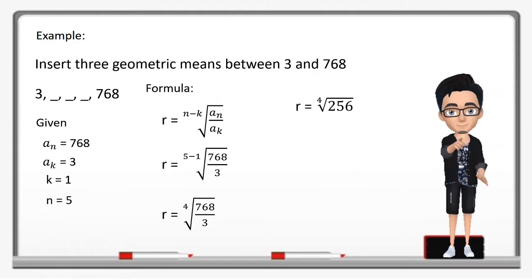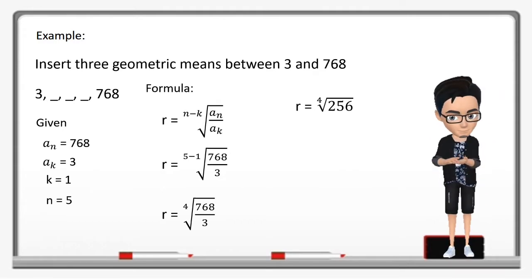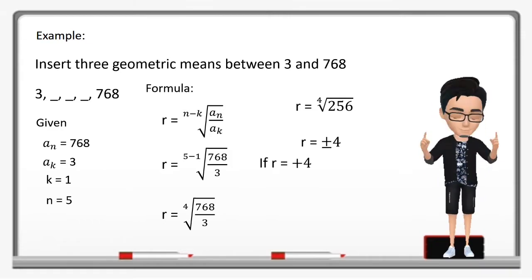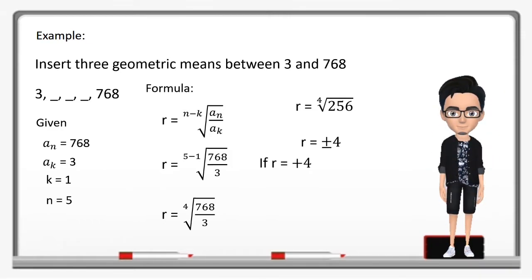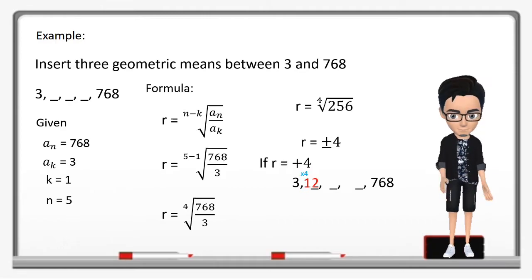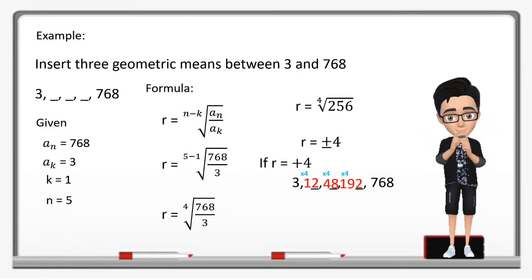Then we find the fourth root of 256. The fourth root of 256 is positive and negative 4. So if r is equal to positive 4, our sequence is: 3, then multiplying each preceding term by 4 — 3 times 4 is 12, 12 times 4 is 48, 48 times 4 is 192, and 192 times 4 is 768.